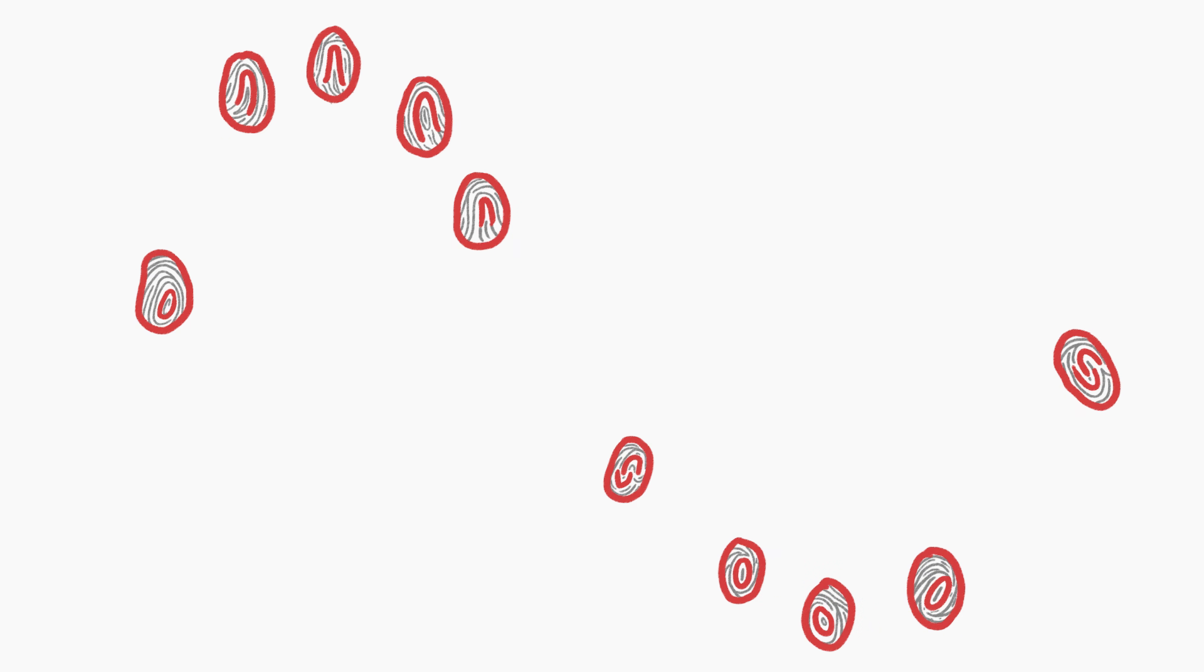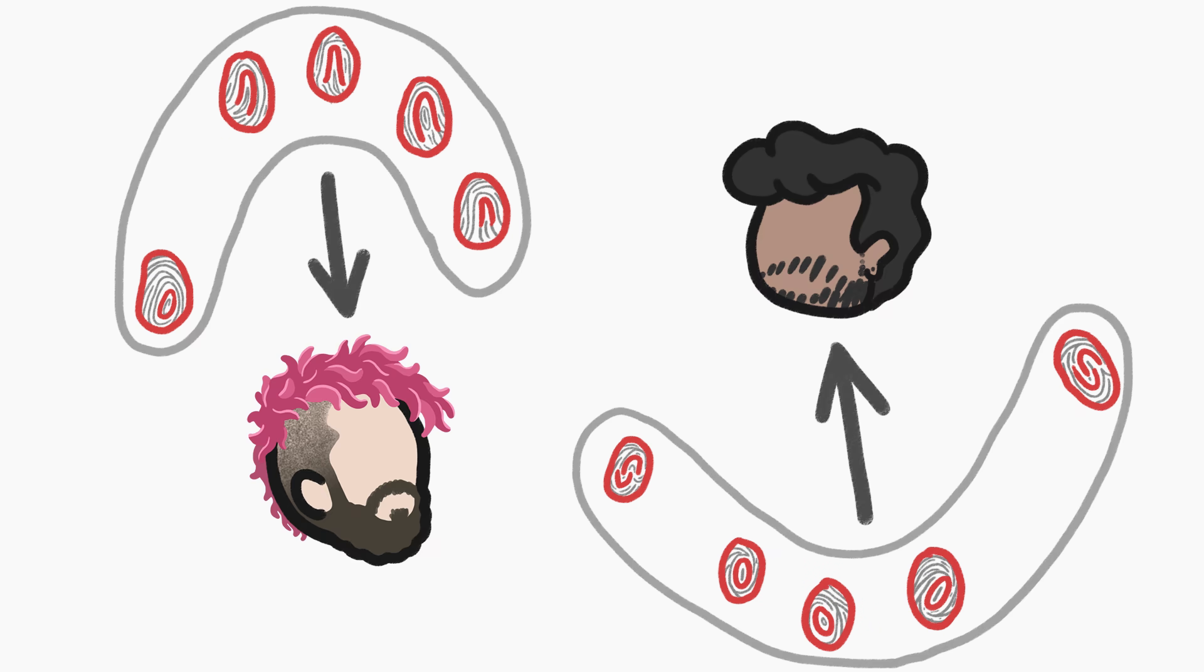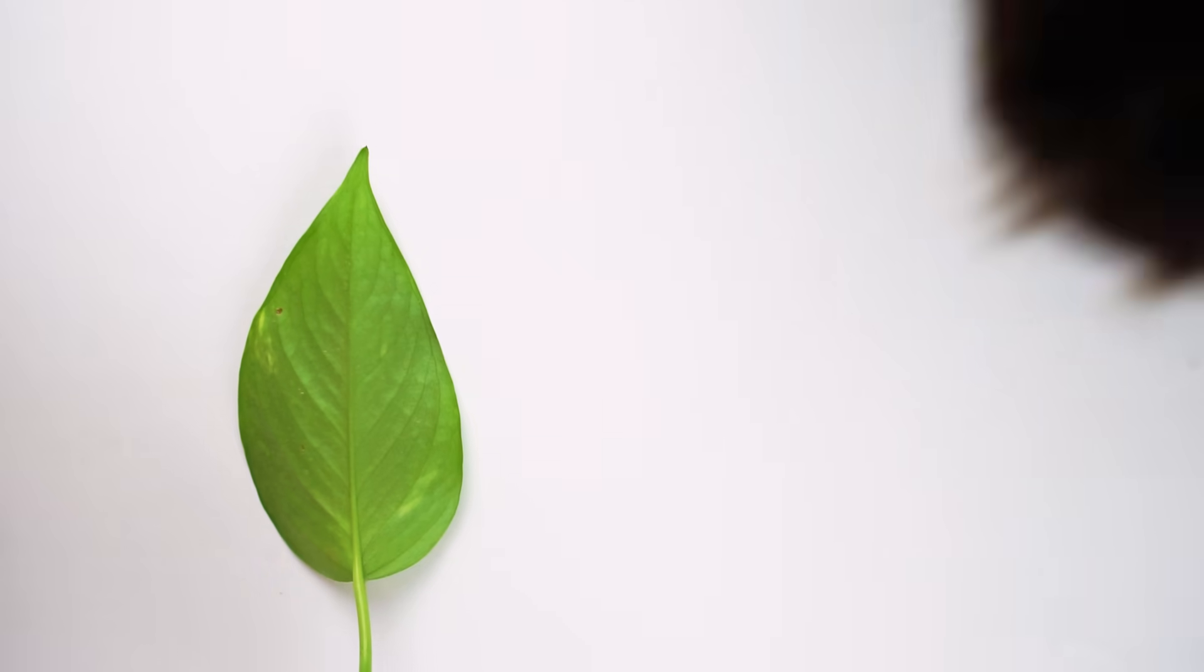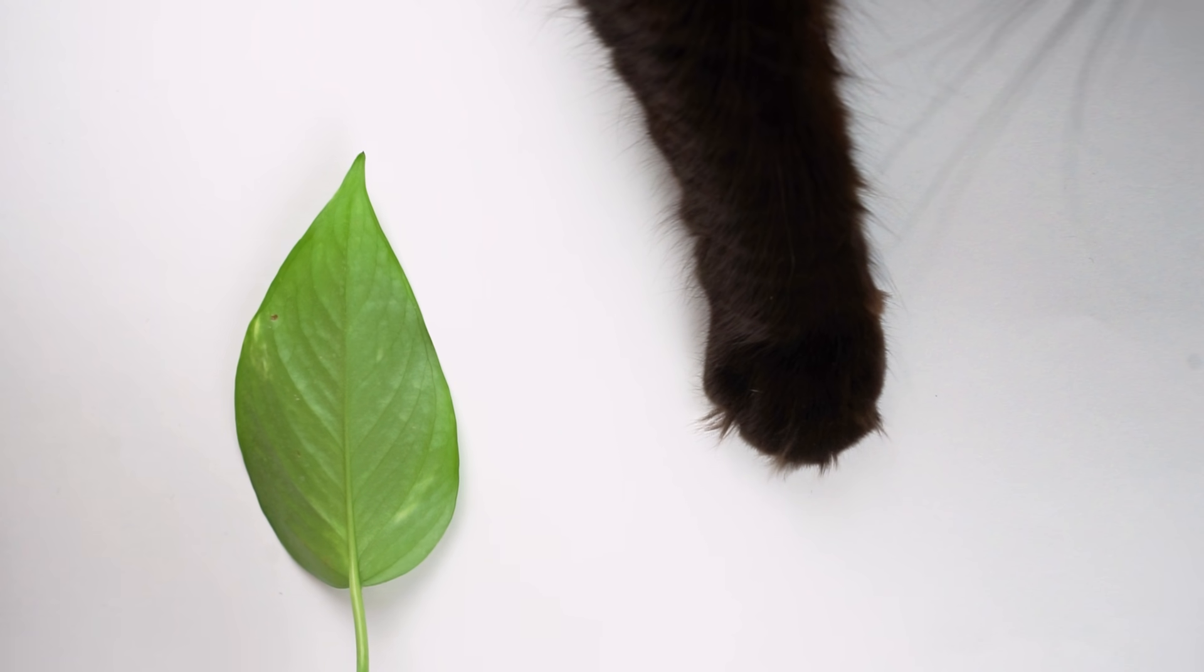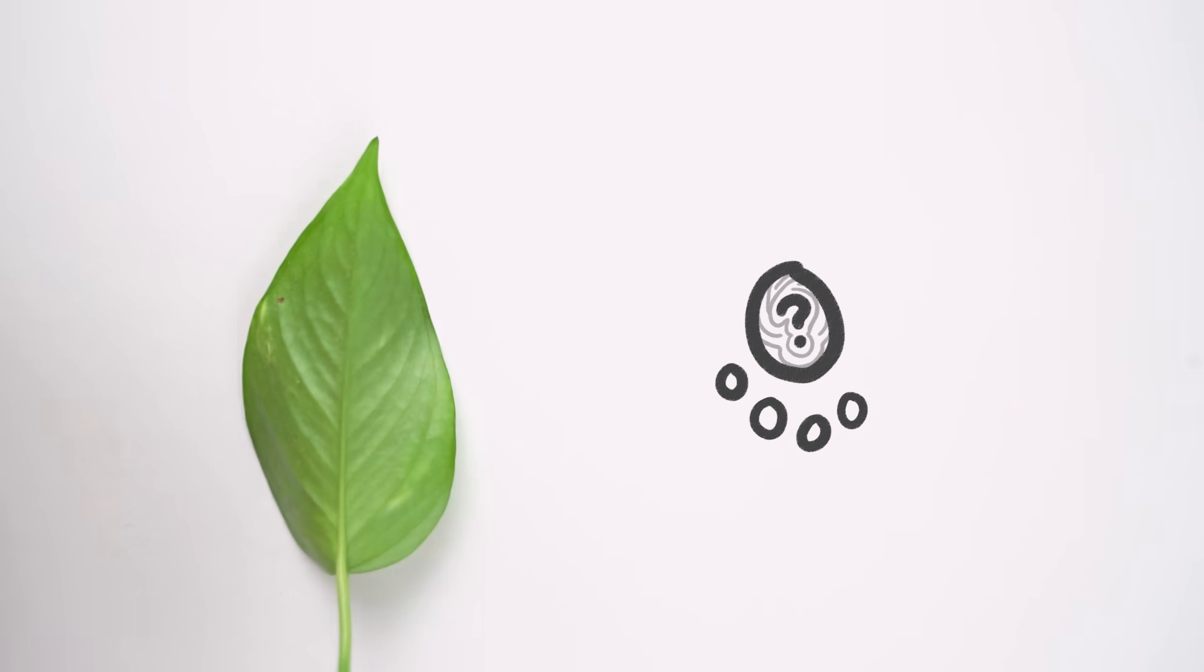Thanks to tiny differences in the swirls and whirls of humans' fingerprints, it's possible to identify the specific person a set of fingerprints belongs to. And we can do something similar with the various species of plants and animals out there, even though most of them don't actually have fingers.